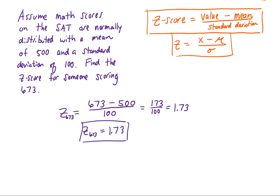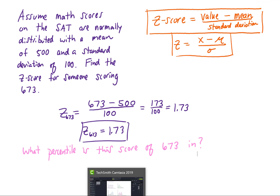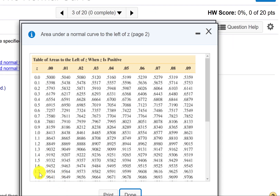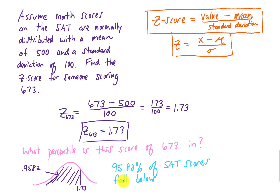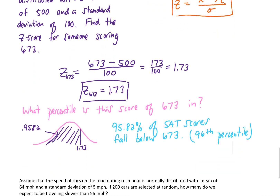Now that we have this z-score, we can answer questions about it. For example, what percentile is a score of 673 in? We look up z equals 1.73 in our table, and it gives us an area of 0.9582, meaning 95.82% of SAT scores fall below that score of 673 on the math portion of the test. That puts the score in the 95th or 96th percentile.